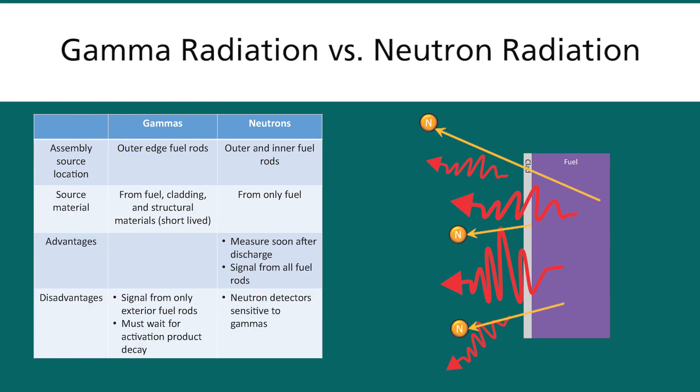For the neutrons, you can measure neutron radiation almost immediately after spent fuel discharge. With the gamma radiation, you will get a lot of the structural activation products, radiation that is not so much useful for examining the spent fuel as we will talk about later.